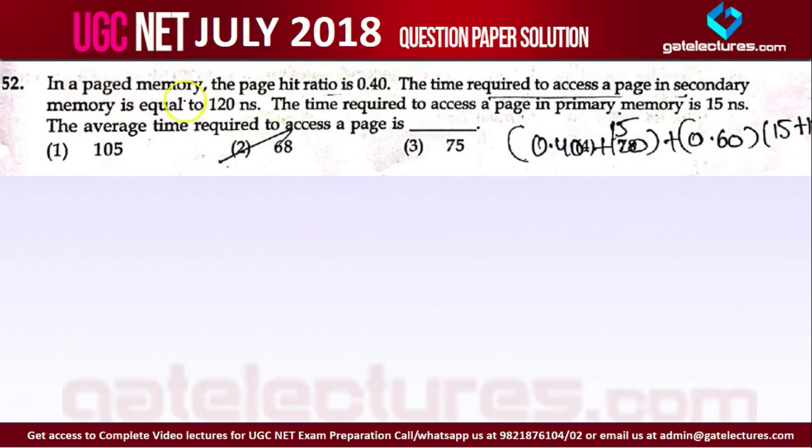Question number 52: In a paged memory, the page hit ratio is 0.40. The time required to access a page in secondary memory is equal to 120 nanoseconds.